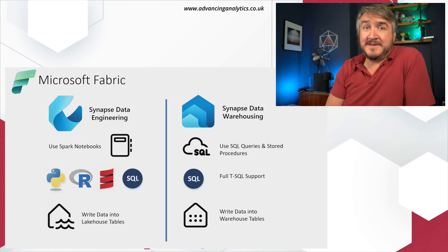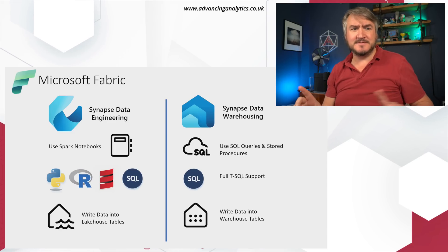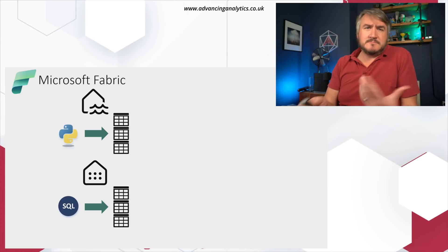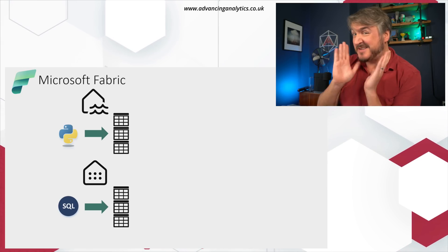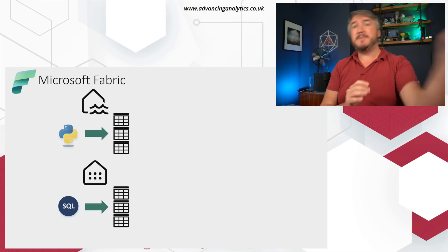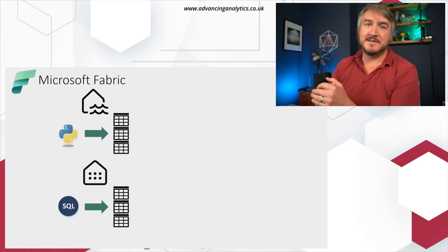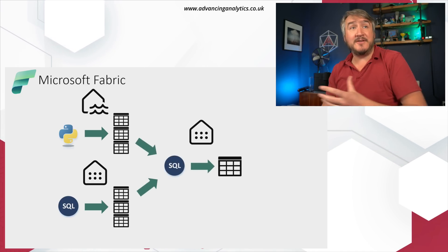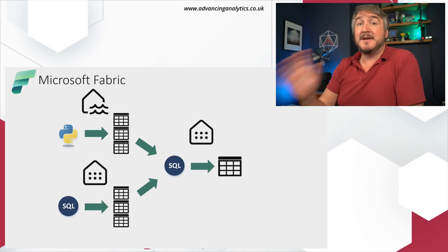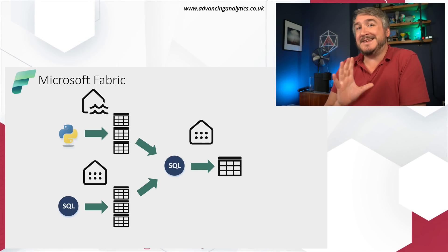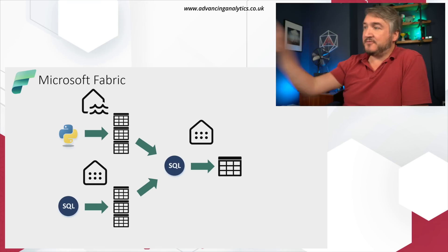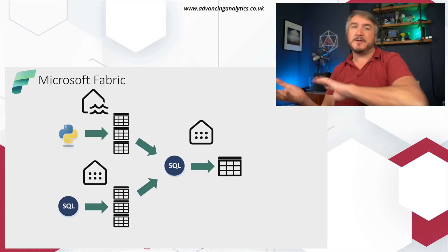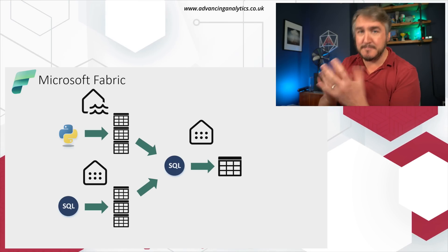So what does that mean? We can mix and match, because they're fundamentally the same thing underneath. We could have Python writing into some lakehouse tables, T-SQL writing into some warehouse tables, and then another warehouse just doing selects and querying those other tables. They can read each other's data — you can read from a lakehouse table and combine it with warehouse tables, and vice versa.